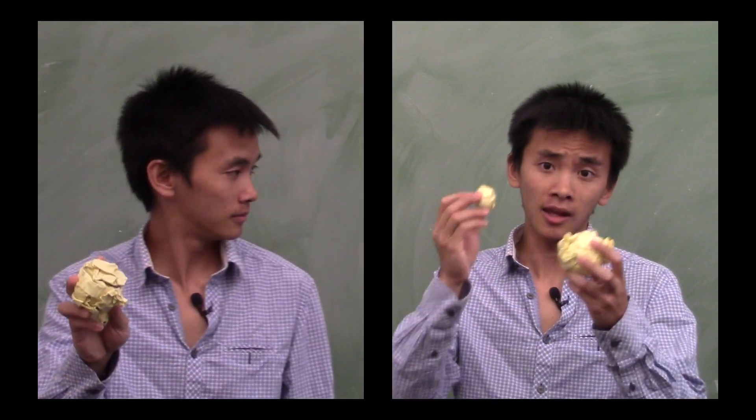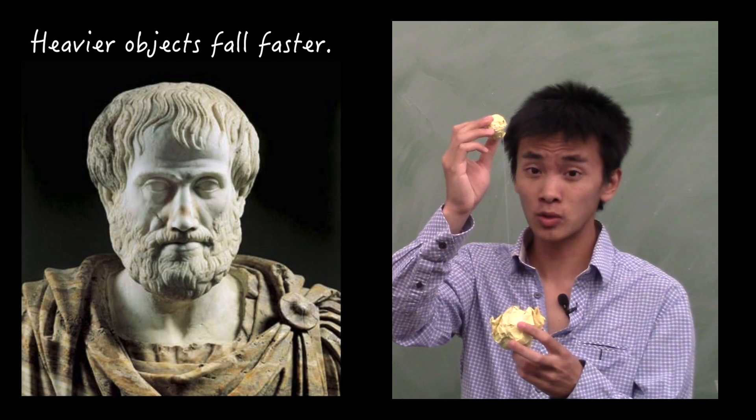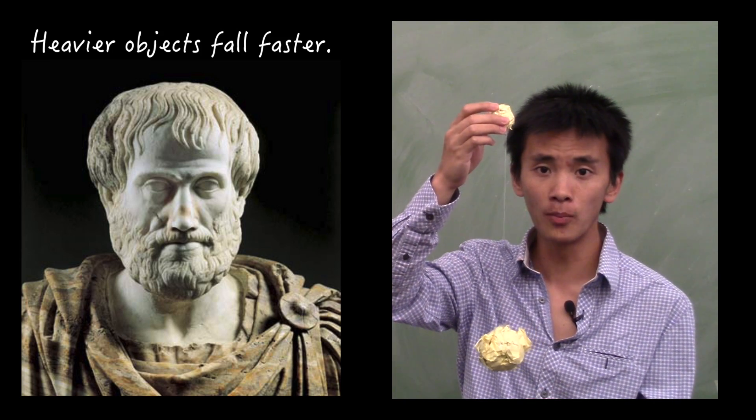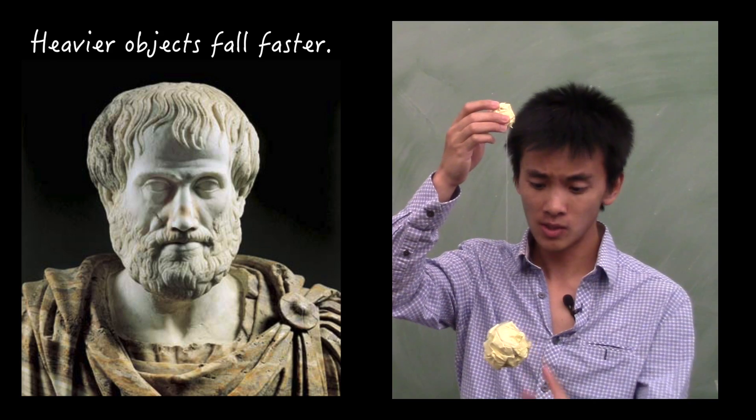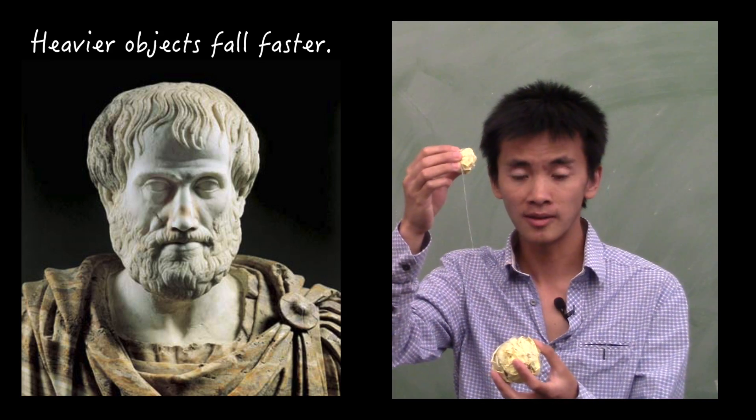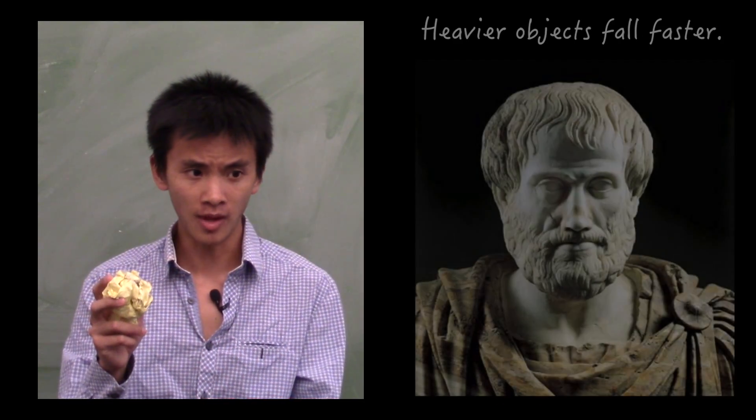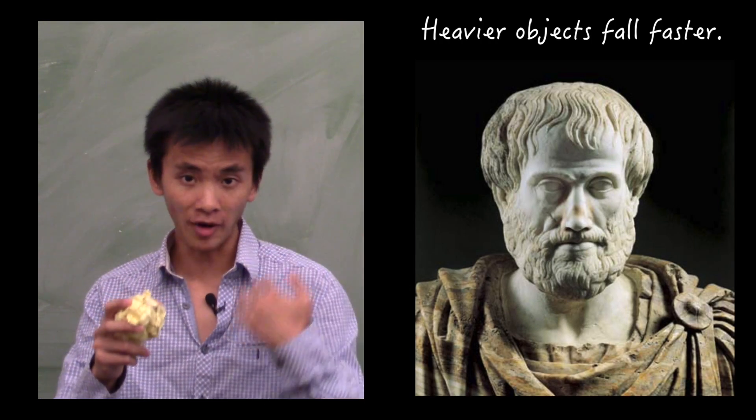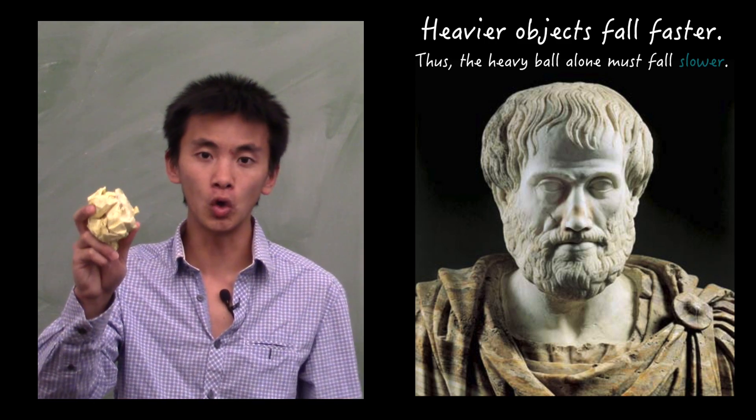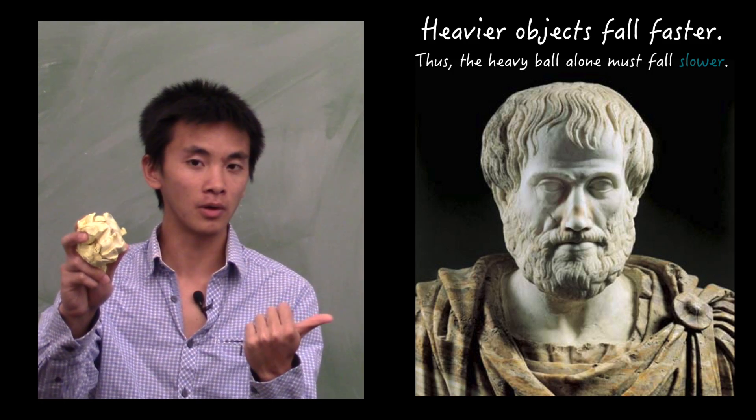On the other hand, if you throw this system, the heavy ball will be falling faster according to Aristotle's principle. And so, the lighter ball should be some kind of parachute that slows down the motion of the heavy ball. So in this system, the heavy ball would be slowed down and should thus fall slower than if it was alone. So if you apply Aristotle's principle and you derive the logical consequences of Aristotle's principle, you must be concluding that the heavy ball alone must fall slower than the heavy ball plus the slower ball.